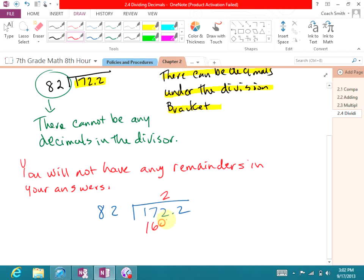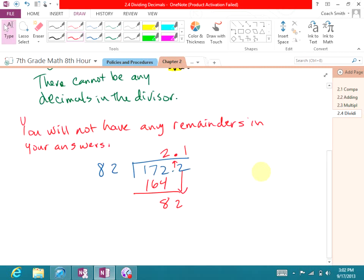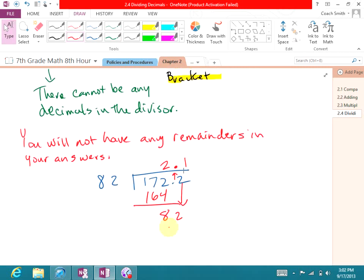That would be 164. That would be remainder 8. So I'm going to bring down my 2, and I'm going to bring up my decimal, and just put it right there where it is in the division bracket. Now, 82 goes into 82 how many times? One time. It goes one time. That would be 82, remainder 0. So my answer is 2.1.